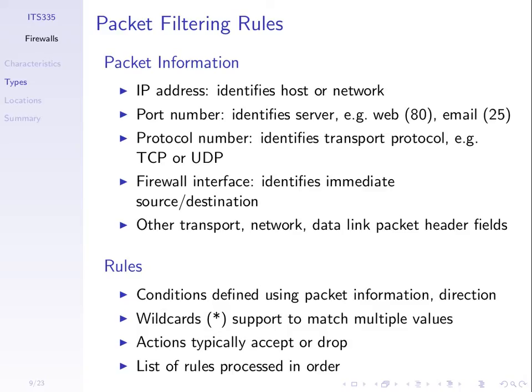In the configuration of the firewall we write rules. A rule contains a set of conditions — usually using packet information: does the IP address equal this value? Does the destination port equal this value? We may use wildcards where we don't have to match a particular value; it can match a range. If these conditions match for a particular packet, we take some action: the two common actions are accept the packet — let it go through — or drop the packet. Other words used are block, reject, allow, but the concept is we either accept or drop packets.